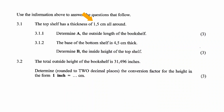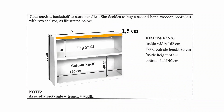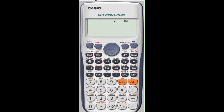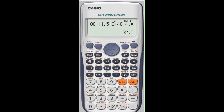We know the top shelf has a thickness of 1.5 centimeters all around, meaning the top layer of the bookshelf has a thickness of 1.5 centimeters and the base of the top shelf also has a thickness of 1.5 centimeters. The inside height of the bottom shelf is 40 centimeters, and the base of the bottom shelf is 4.5 centimeters. So, the height B equals the outside height of 80 centimeters minus the sum of the top and base of the top shelf, the height of the bottom shelf, and the base of the bottom shelf. Typing this into the calculator gives us 32.5 centimeters.